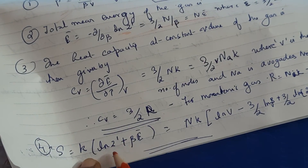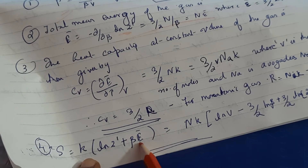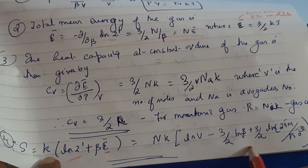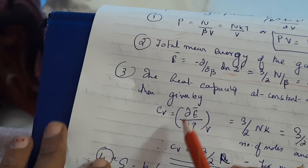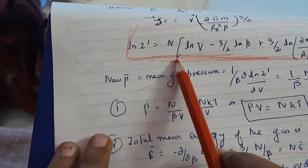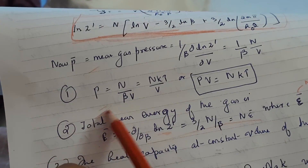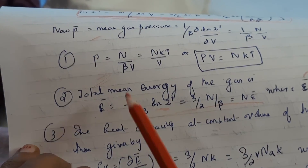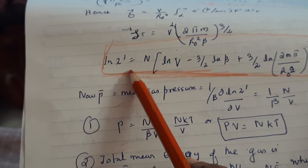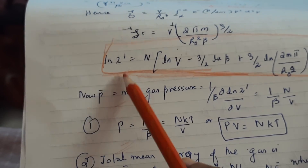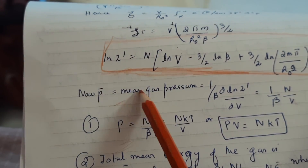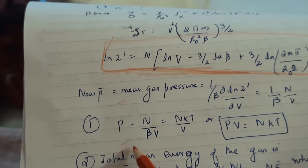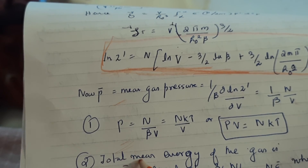For entropy, S = k ln Z + β·E. We already have the value of mean energy and the value of the partition function, so just substitute and you get this equation. So by knowing and deriving the partition function, you can get the values of pressure, mean energy, entropy, and specific heat at constant volume — all these things can be derived from the partition function. This is why the partition function is very, very important: for any system, if you just derive the partition function, you can find basically all the thermodynamic values.